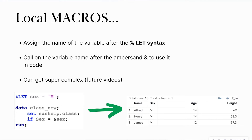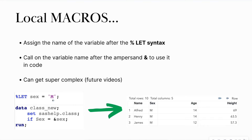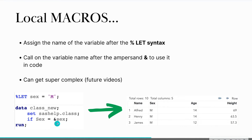Local macros are going to be a macro stored in a variable after the %let syntax. You call on that variable name after the ampersand to use it in any of your code. In this example, I have %let — notice how it turns blue, meaning SAS recognizes I'm about to create a macro. I call the macro 'sex', which is the name of the variable, and I'm storing sex to be equal to capital M for male. Now in a data step to filter my data, I have 'if sex equals &sex' and this is going to return M's.